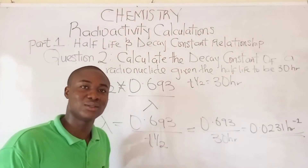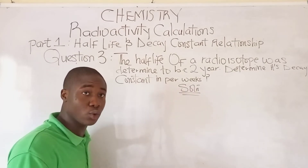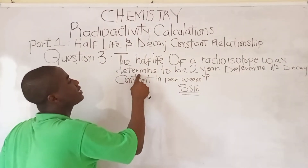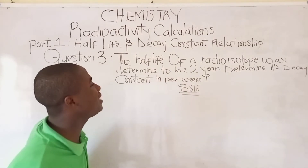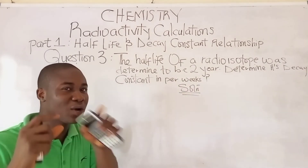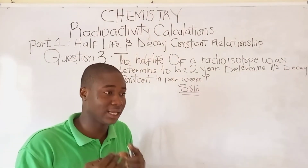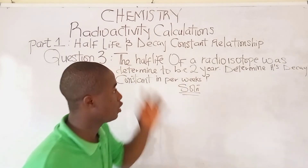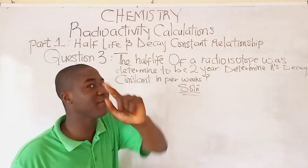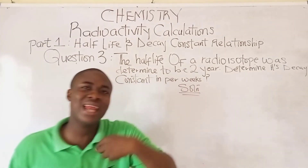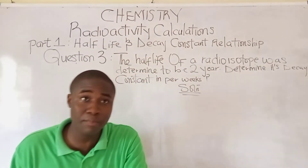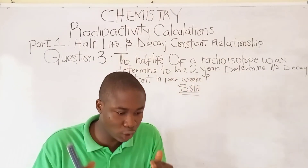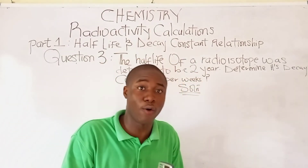Let's move over to the third question, which says: the half-life of a radio isotope was determined to be two years; determine its decay constant in per weeks. This question requires care — you don't just apply the formula and get the answer. If we check carefully, the half-life is given in years, but they are asking for the decay constant in per weeks. Years and weeks do not directly relate, so we must make sure both units are in the same form.